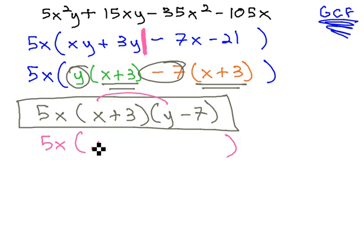x times y is xy, x times negative 7 is negative 7x, 3 times y is 3y, and 3 times negative 7 is negative 21.